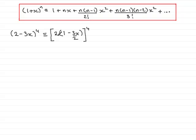Now, when you have a product inside a bracket, all raised to a particular power, in this case 4, this is exactly the same as each part of the product raised to the power. And in this case, it would be 2^4 times (1 - 3x/2), all to the power 4.